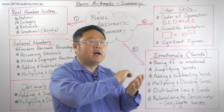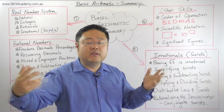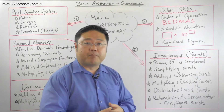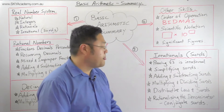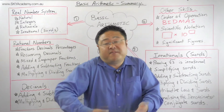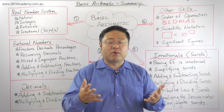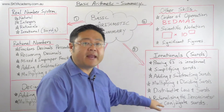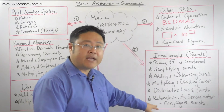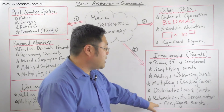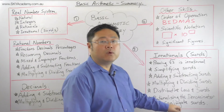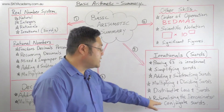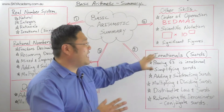We also learned the distributive law with surds — expanding a number outside brackets multiplied by surds inside. We learned how to rationalize the denominator, making sure the denominator is a rational number. Sometimes this requires multiplying by the conjugate surd of the denominator.